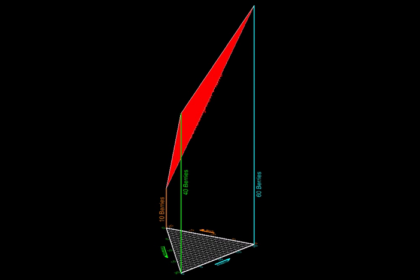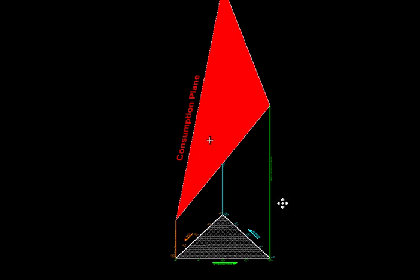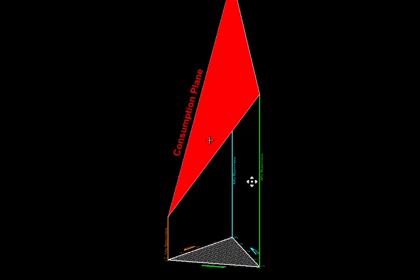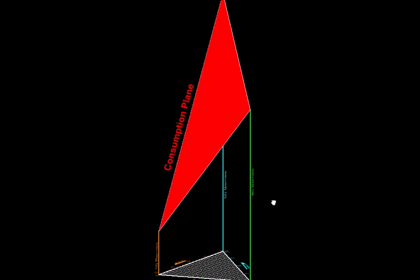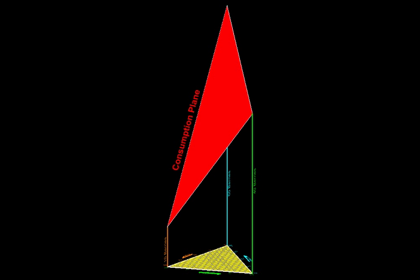So we are going to connect these three points, and the triangle that is thus formed is our consumption plane. By that I mean if you have any combination down here, you can just draw a normal up to this plane and the length of that normal up to that plane would indicate what is the consumption of that particular combination.